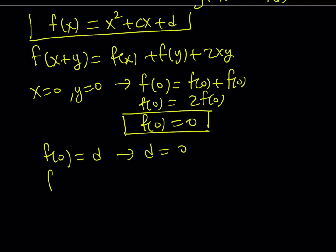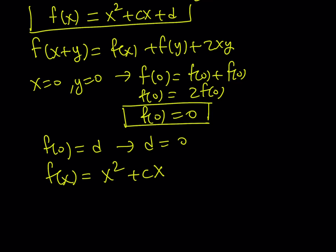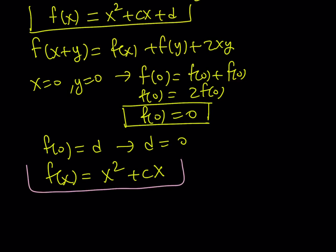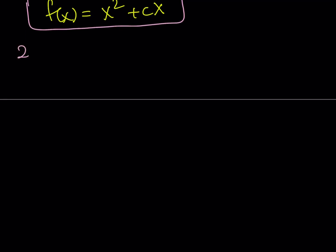Which means f(x) can be written as x² + cx, where c is a constant, d is 0, so I don't have to write it. And this brings us to the end of the first method, because we're going to use the second method now. Second method.